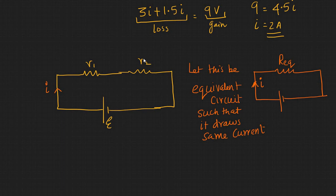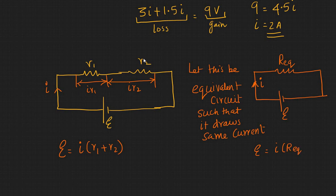You can say let this be equivalent circuit such that it draws the same current. Now let's analyze the left one. So you have e is equal to i into R1 plus R2, because the drop here is i into R1 and the drop here is i into R2. And on the right hand side, your e would be equal to i into R equivalent.